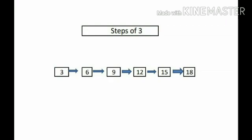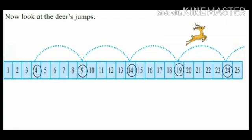Now, next. Look at the deer's jump. The deer was at number 4, then he jumped and reached 9, then 14, then 19, and then 24.